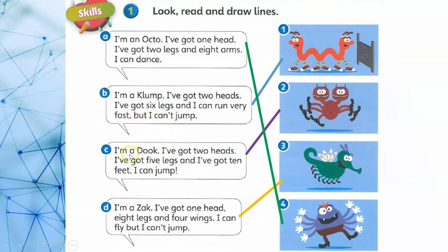Number C, I'm a Duke. I've got two heads, I've got five legs and I've got ten feet, and I can jump.